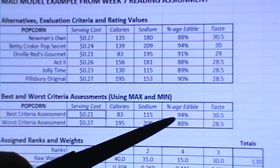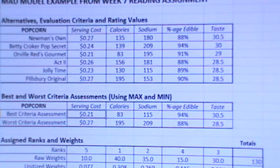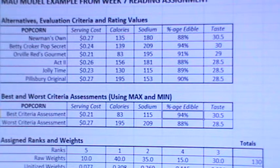I can just show you — if I tab across you can see minimum for calories is the best, minimum for sodium is the best. Now you see up here it went to maximum as the best for edible and maximum as the best for taste.